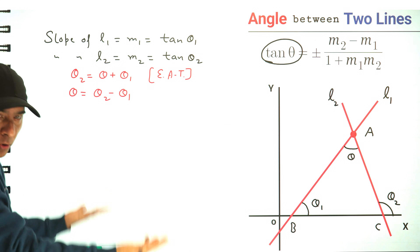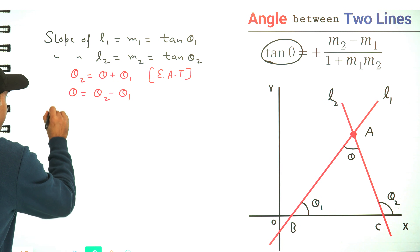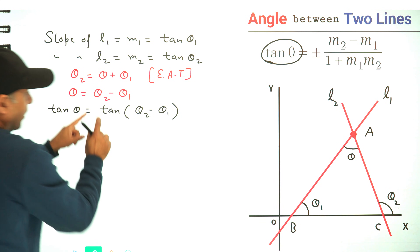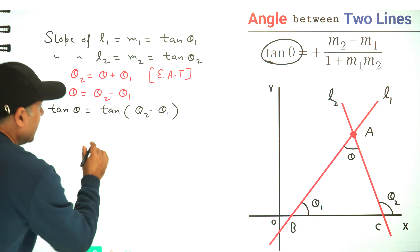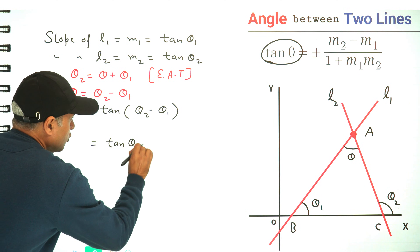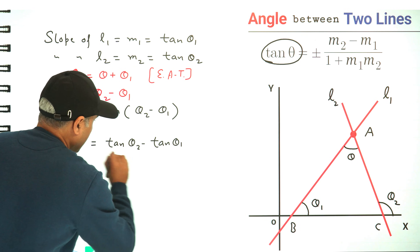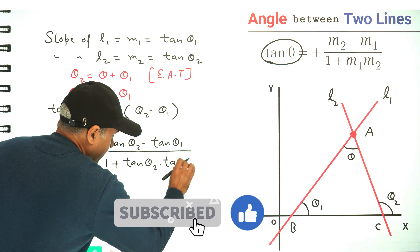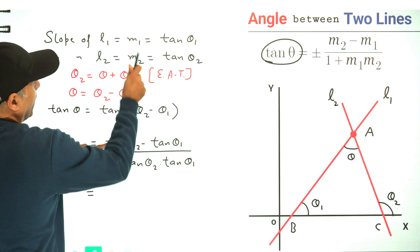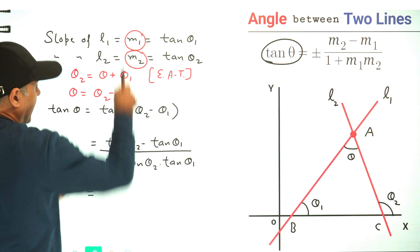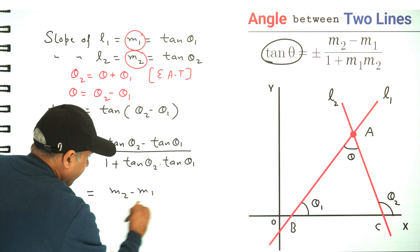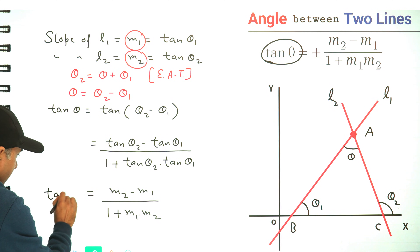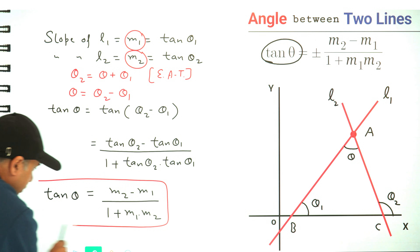Taking tangent on both sides, we get tan theta equals tan(theta 2 minus theta 1). This is of the form tan(A minus B), so applying the formula this becomes tan theta 2 minus tan theta 1 divided by 1 plus tan theta 2 times tan theta 1. Since tan theta 2 is m2 and tan theta 1 is m1, this equals m2 minus m1 over 1 plus m1 times m2. This is the value of tan theta — that's what we wanted to prove.